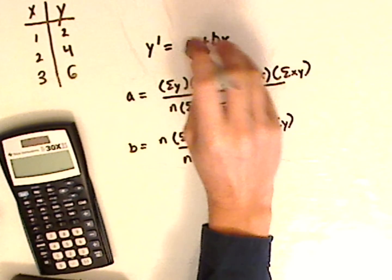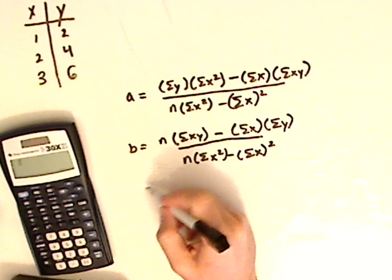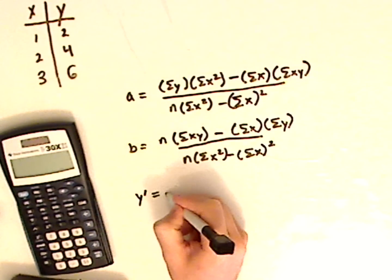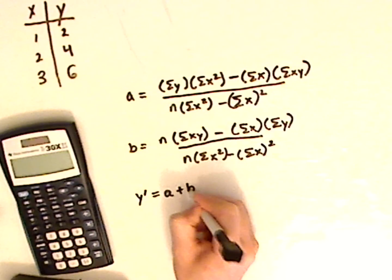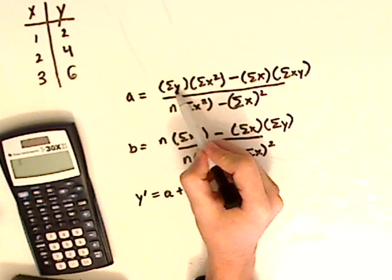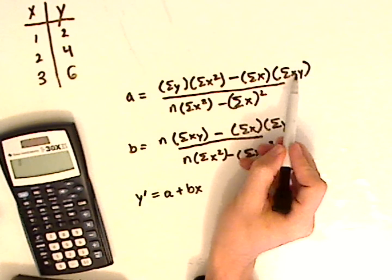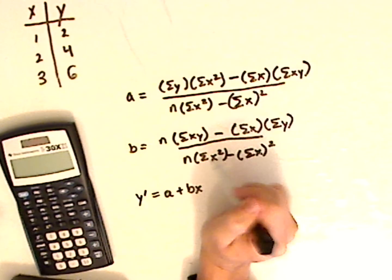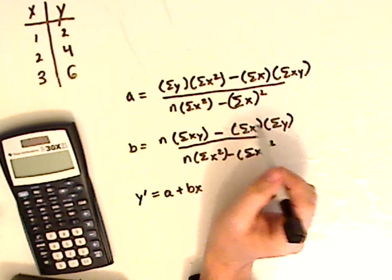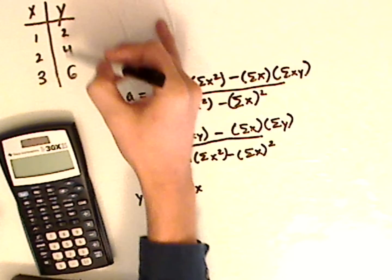I'm going to erase this because we're going to need room to put different columns. Notice what we need: we need the summation of y's, the summation of all the x squares, the summation of x, and the summation of xy's. Notice we don't need any y squares. We do need x squares, and we do need x times y. Now n stands for the number of points or the number in the sample.